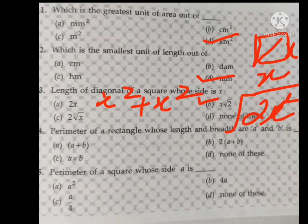Question number 4: perimeter of a rectangle whose length and breadth are A and B. So we know, the perimeter of rectangle is 2 into A plus B.